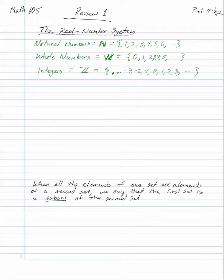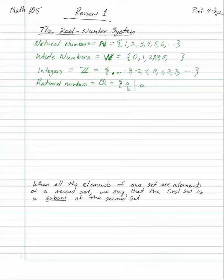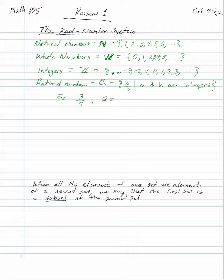The next set is the rational numbers. We use Q with an extra line. Rational numbers are the set of all numbers A over B such that A and B are integers — a fancy way of saying all numbers that can be expressed as a ratio of two integers. For example, 3/5 is rational, and 2 is rational because you can write it as 2 over 1.